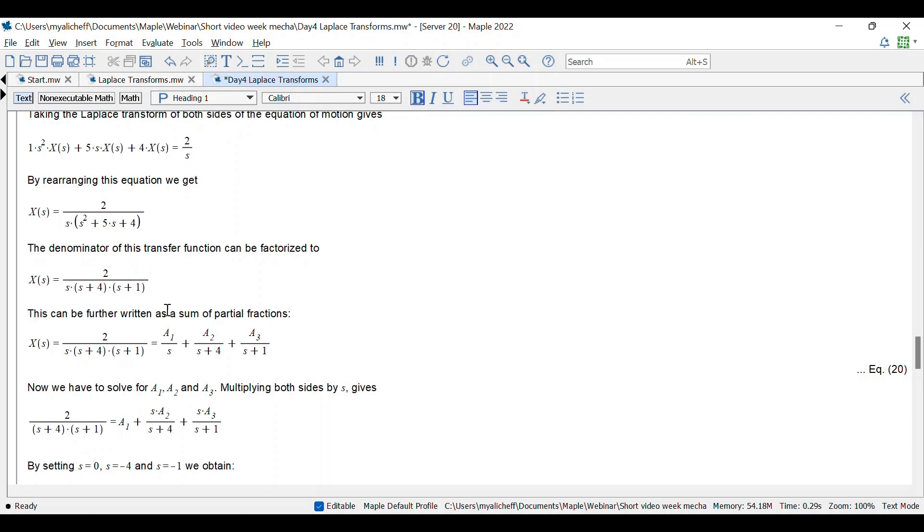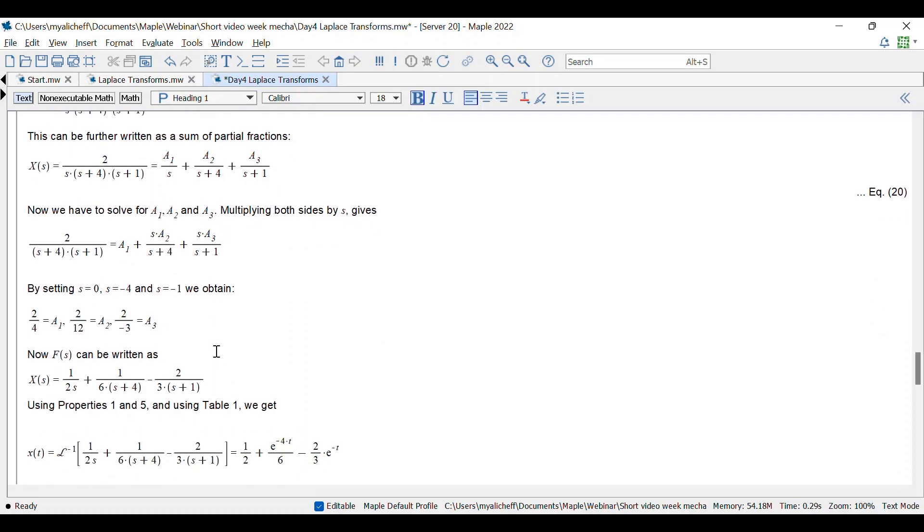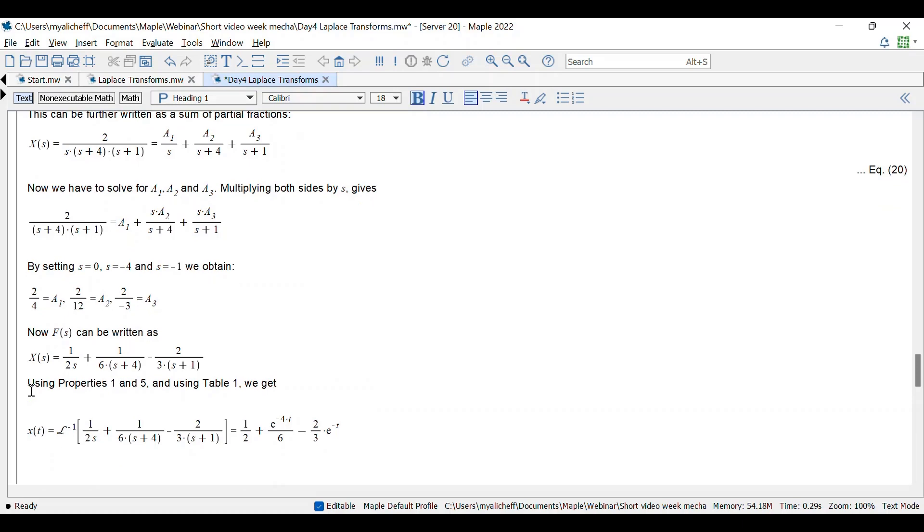We can then use the partial fraction method here when we factorize the function. And then we can solve for A1, A2, A3. And then when it's solved for specific cases here, we can rewrite the Laplace transform. We can go back to the table, use the properties we know, because here we recognize some functions. And then we can get the solution. So you can see you have to use several methods and you have different steps. So it takes some time.